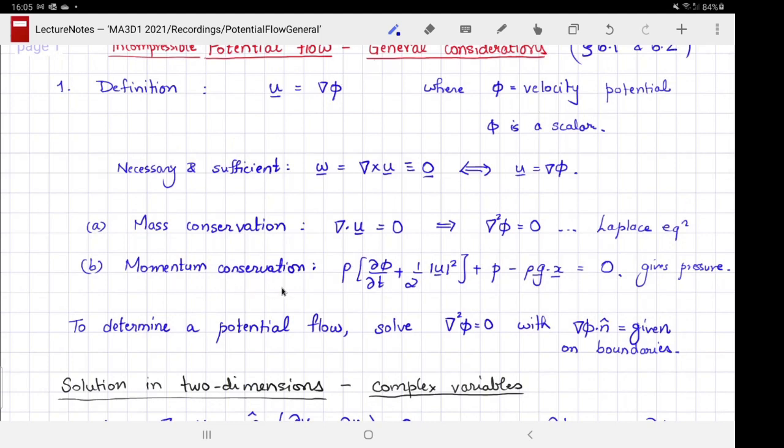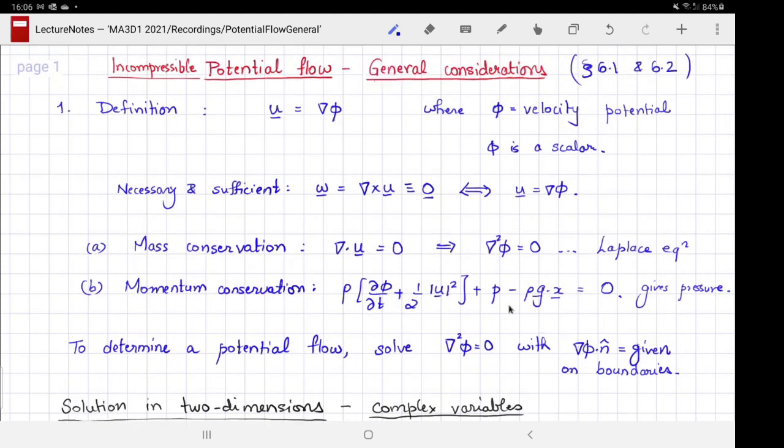Momentum conservation: there is a whole separate category of Bernoulli equation which gives you pressure explicitly for potential flow if you know the velocity potential. So the whole problem reduces to solving Laplace equation that satisfies your boundary conditions. If you know the velocity on the boundary, you would need to know the normal component of the velocity on the boundary or the tangential component, but not both. The viscous term is automatically accounted for in Bernoulli.